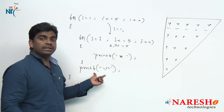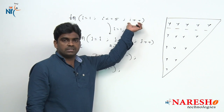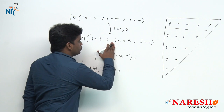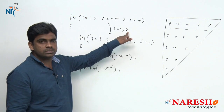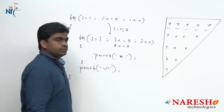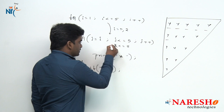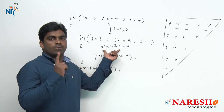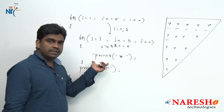Whenever the outer for loop completes one iteration, it goes for the second iteration — I value increases by 1, i++, so I becomes 2. The control comes inside and J value restarts with I, so J also starts with 2. 2 is less than or equals to 5 — condition true — it prints stars for J = 2, 3, 4, 5, so 4 stars print in the second row. Then inner for loop terminates and again a newline character.